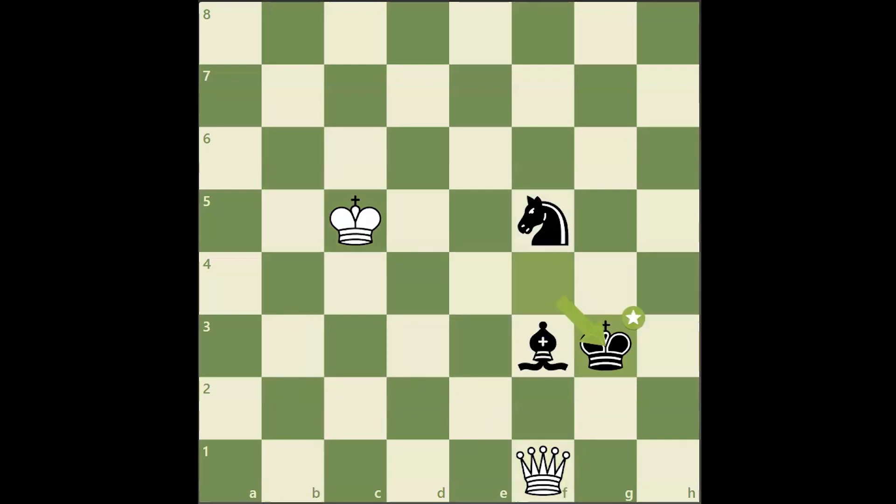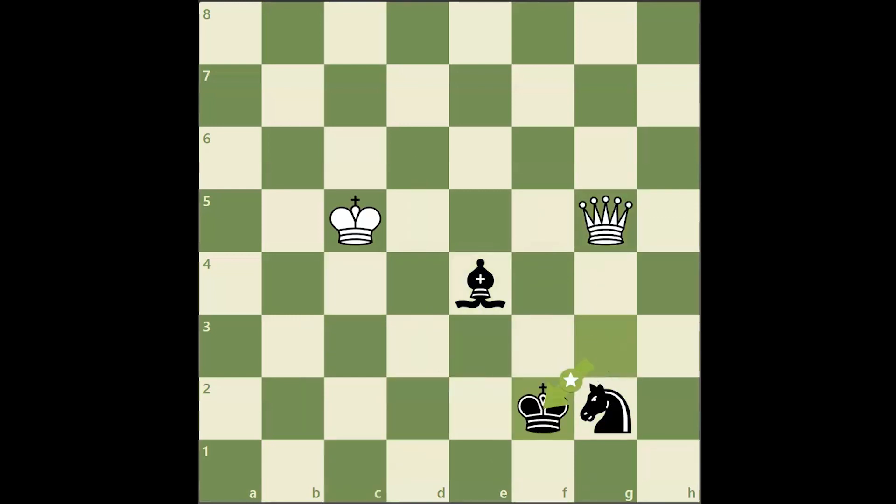Because black's bishop can't attack dark squares, it's very effective to conduct your attacks on dark squares near black's king.